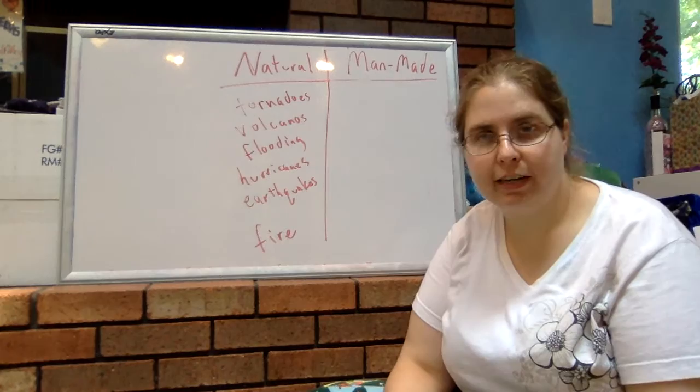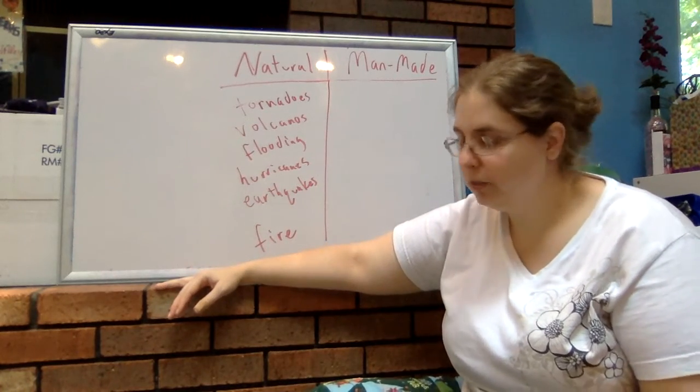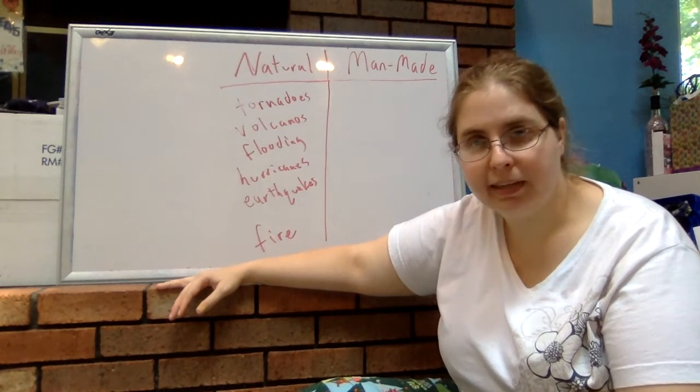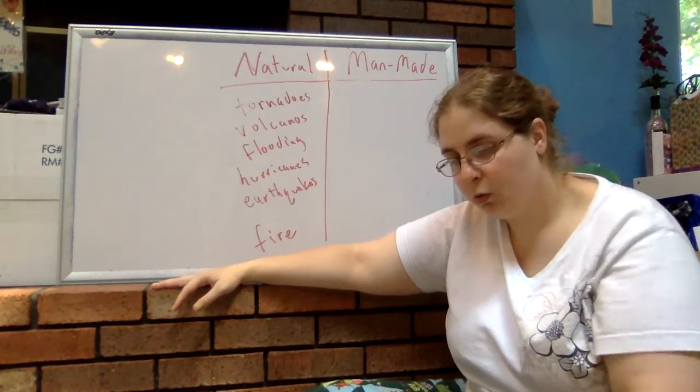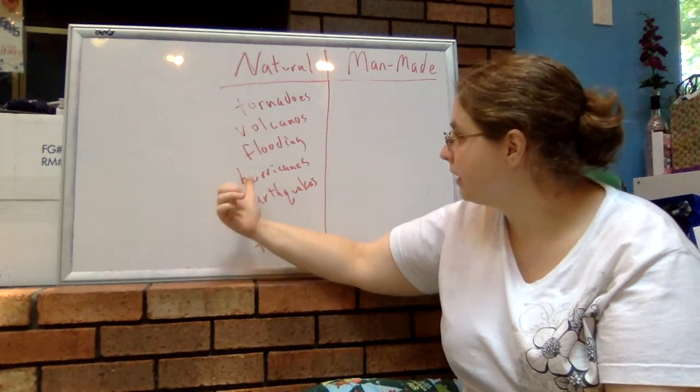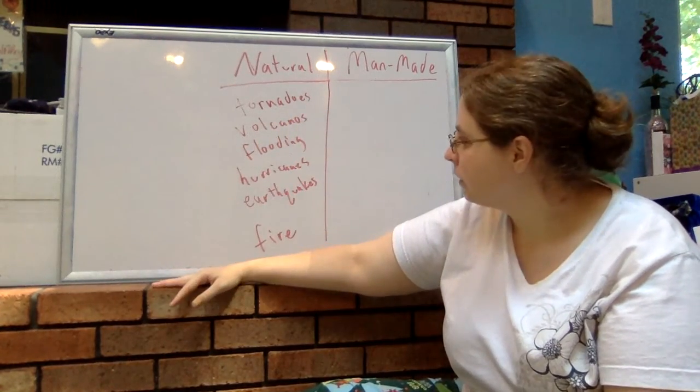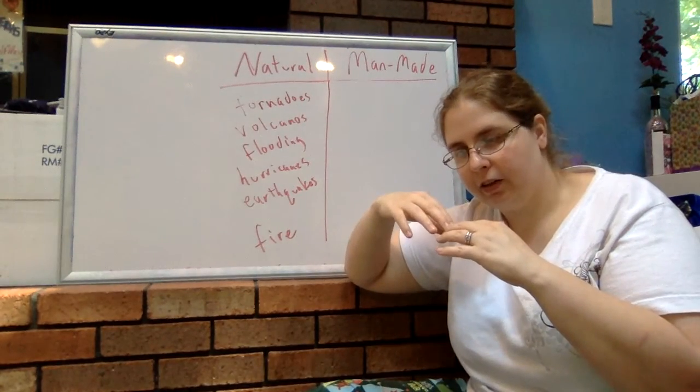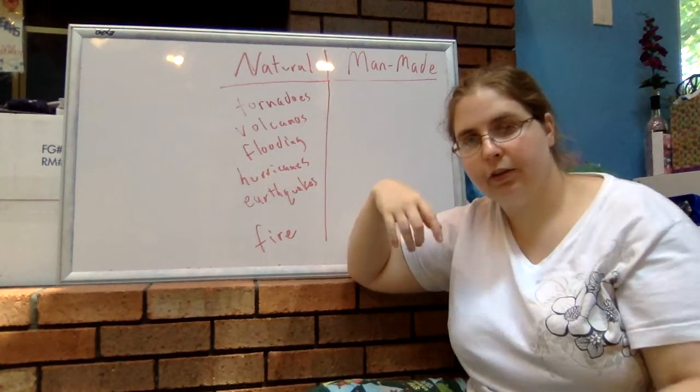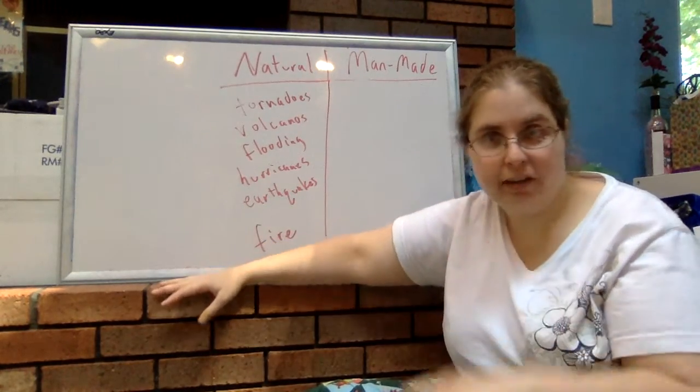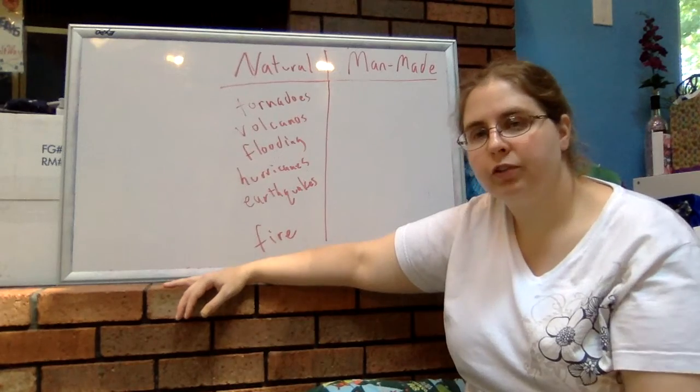We consider all of these natural disturbances because each one will affect an ecosystem. Tornado winds can rip trees out of the ground. Volcanoes can completely destroy all the plants on the mountainside. Flooding can kill off organisms and damage the plants. Hurricanes include flooding and tornado-strength winds. Earthquakes can cause trees to fall over, and lakes and rivers to drain if there's a split in the earth underneath. Lightning-caused fire will burn down a forest. All of those create damage or destruction to an ecosystem.